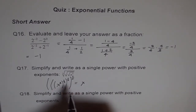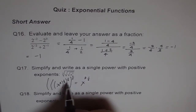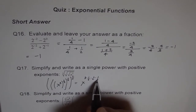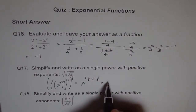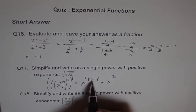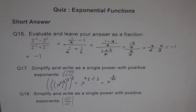So we have x to the power of 3 times one-half, times one-half, times 1 over 5. The 3 stays in the numerator, and the denominator is 2 times 2 times 5, which equals 20. So the answer is x to the power of 3 over 20.